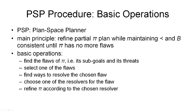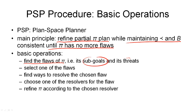Here is an informal overview of the basic operations that we need to perform during our plan space search. The main principle behind the algorithm is that we always refine our partial plan while maintaining the ordering and binding constraints in a consistent fashion until the plan has no more flaws. This is the main loop of our algorithm. Within this main loop, what we have to do is first find the flaws that are currently in our plan. These flaws can be either sub-goals or threats. We need to identify them so that we can remove them from the plan. We will deal with these flaws one at a time, so the next step is to select one of those flaws.